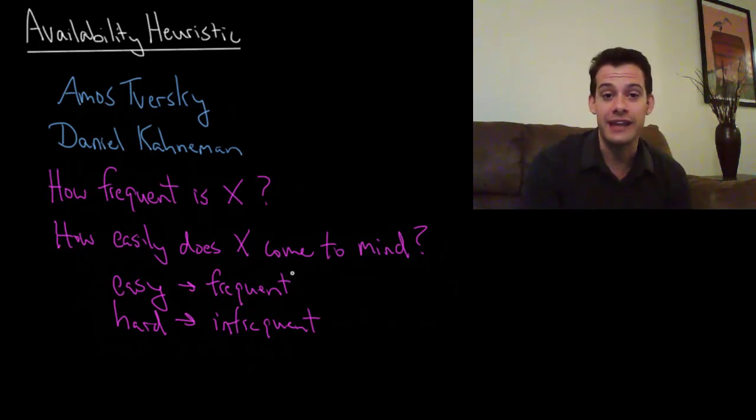So that's essentially the availability heuristic. This idea that we aren't good at estimating frequency and so we base it on how available things are to our mind. How easily do they come to mind and we estimate frequency based on that.